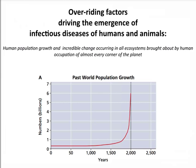Population is huge in this emergence story. This graph of human population growth over the last 2,000 years shows it remained at a low level for many years, and then look at how it's taken off very recently — these are billions of people. With this growth, we invade different parts of the world, we have more contact with animals that carry their viruses, and the crowding among humans helps to spread them as well.